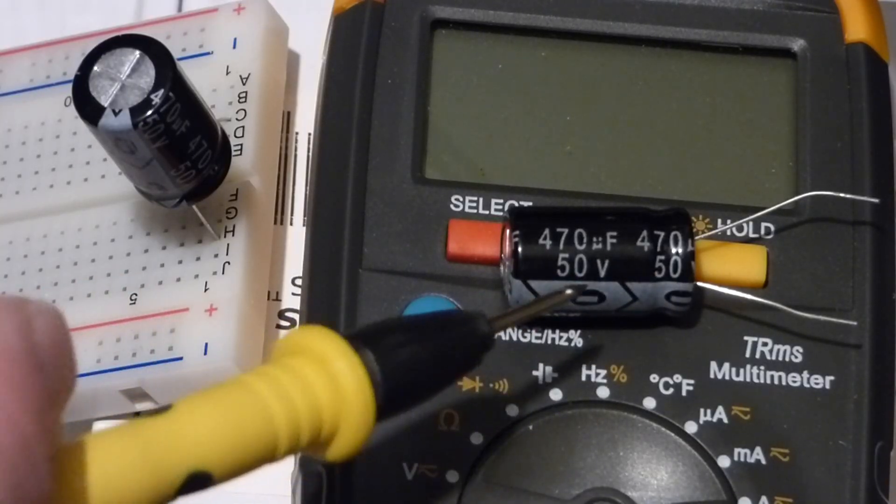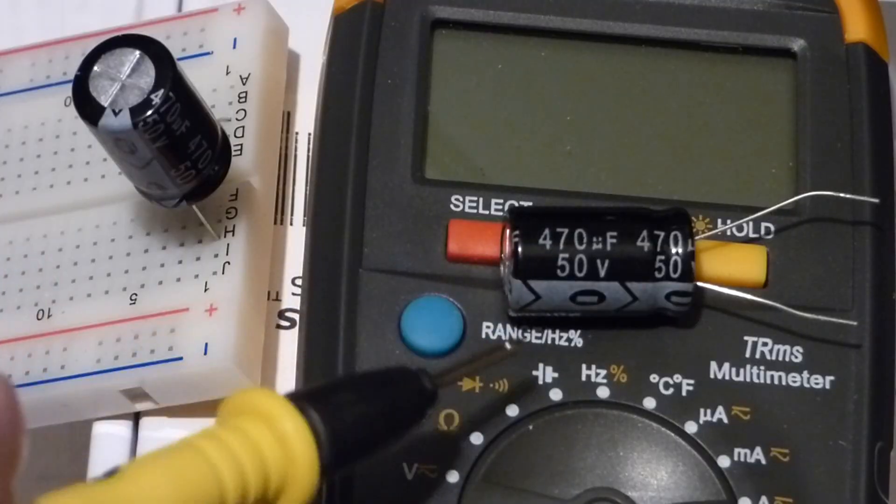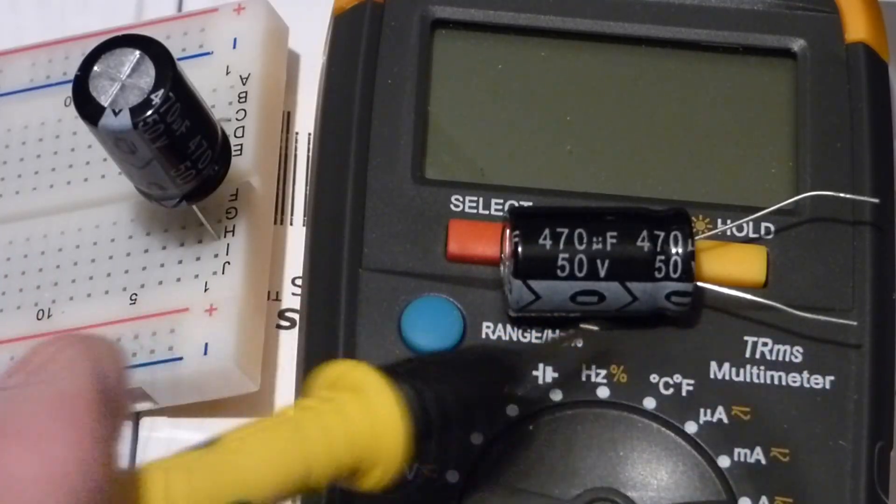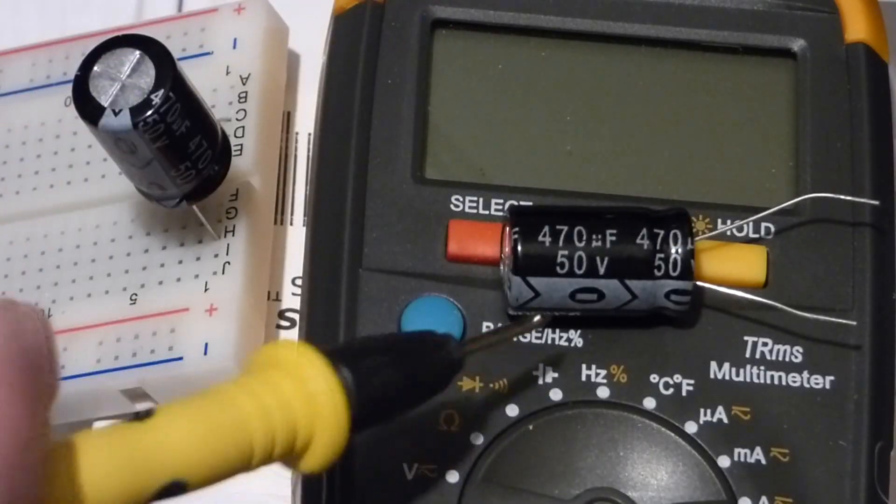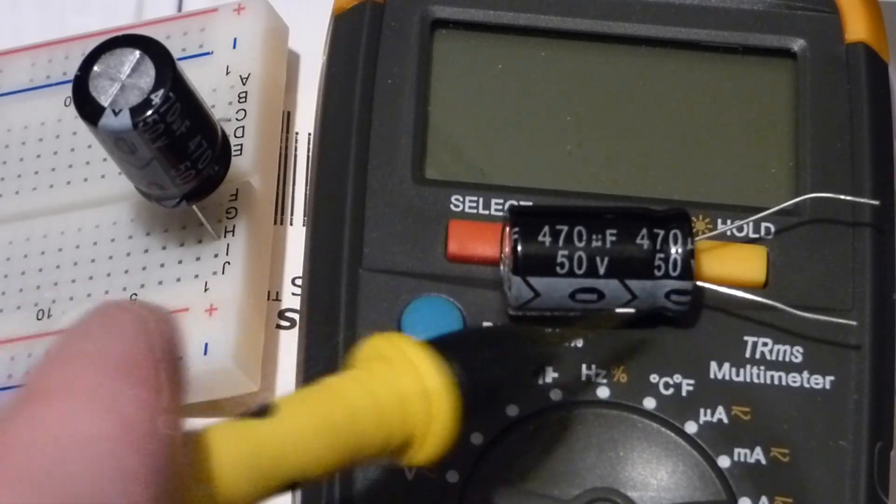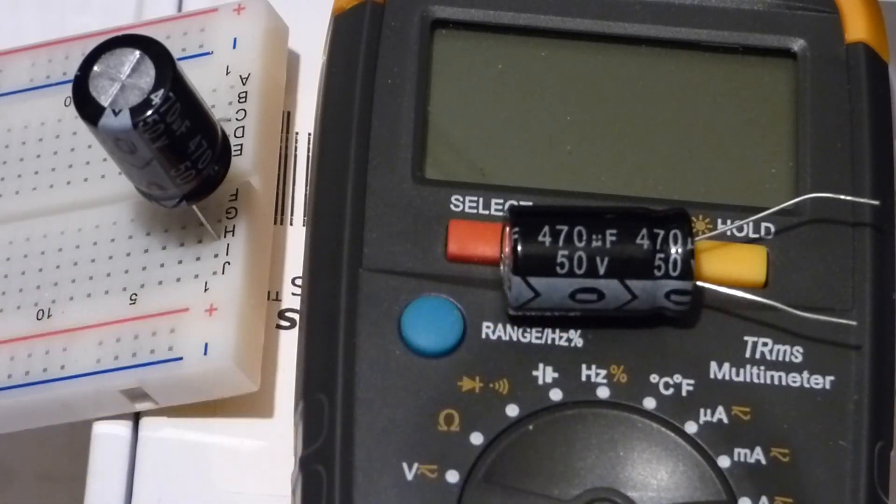Now this is a polarized capacitor. This is electrolytic which means this side needs to always have a more negative charge than this side. And this side has some little dashes here for the negative and the arrow pointing down to the pin.